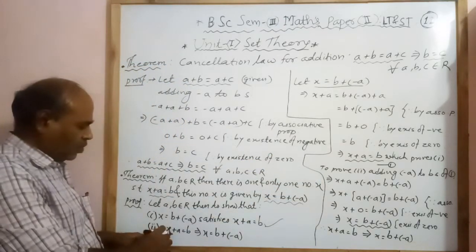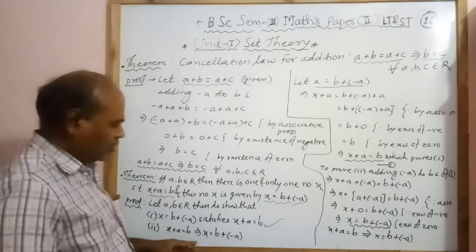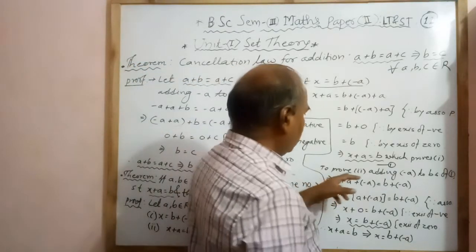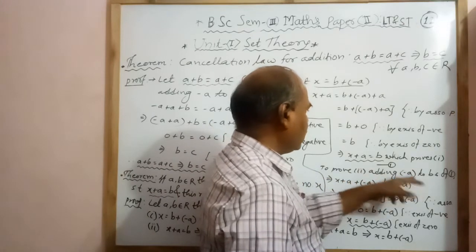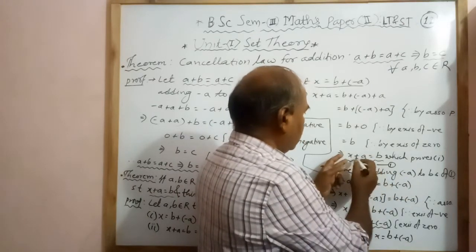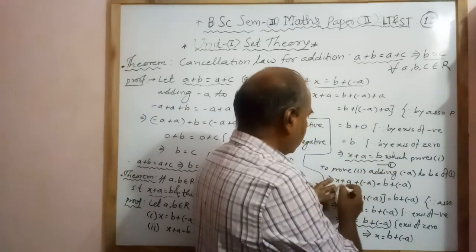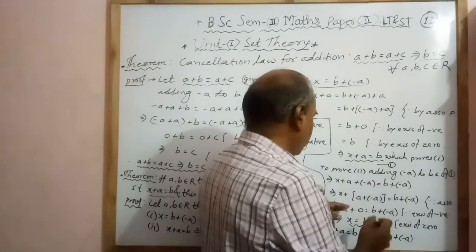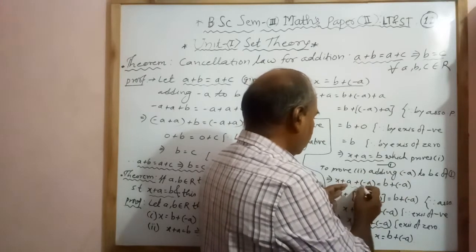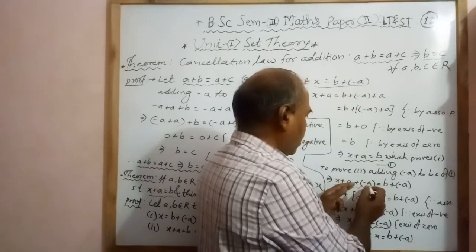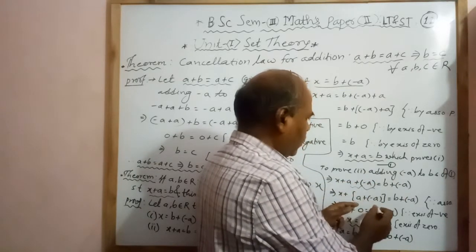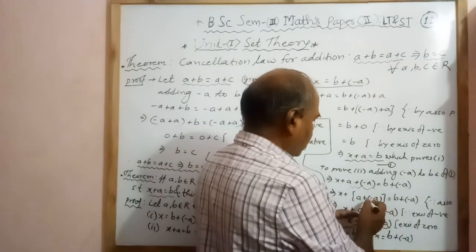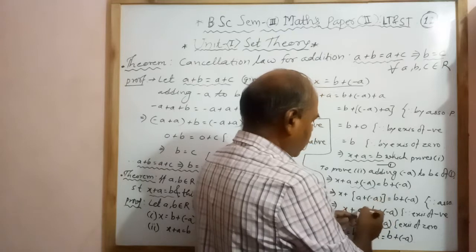For the second part, we prove that x plus a equals b implies x equals b plus minus a. Adding minus a to both sides of the equation x plus a equals b, we get x plus a plus minus a equals b plus minus a. Again by the associative property, we associate a and minus a in one bracket. By the negative property, a plus minus a gives 0.